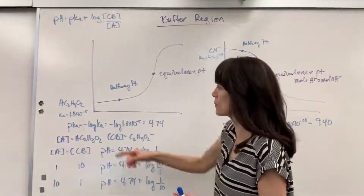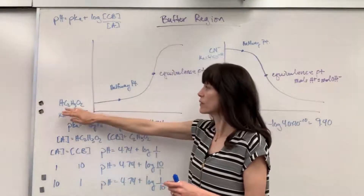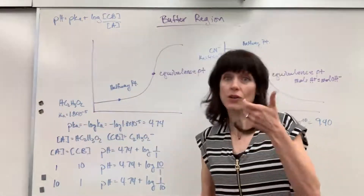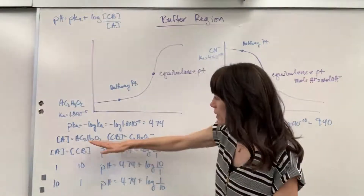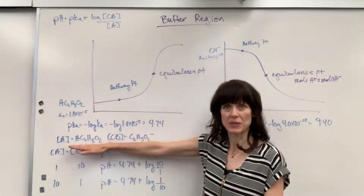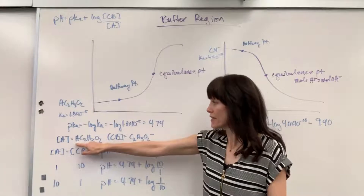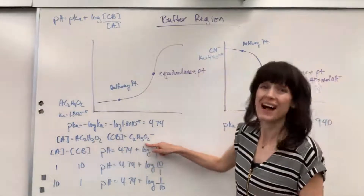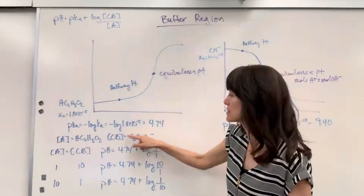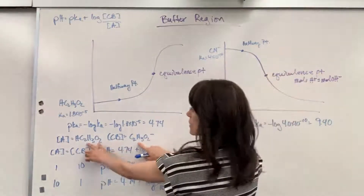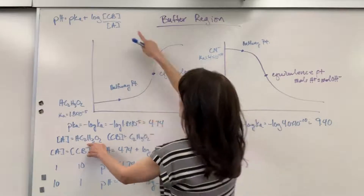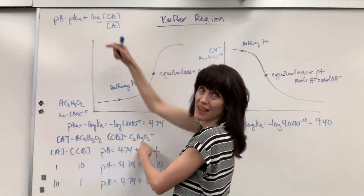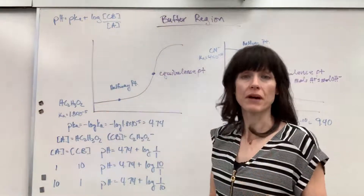Here's an example. We're going to pretend that we are titrating acetic acid with sodium hydroxide. That acid-conjugate base pair — here it is. It's going to be the acetic acid, and when that donates the hydrogen, it becomes the acetate ion, which is the conjugate base. That acid-conjugate base pair is going to make the buffer.